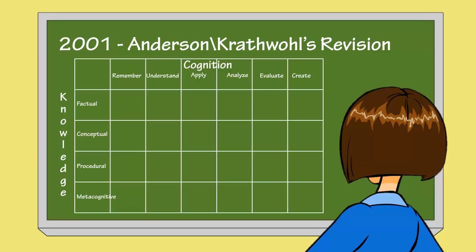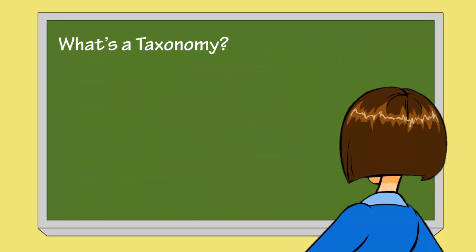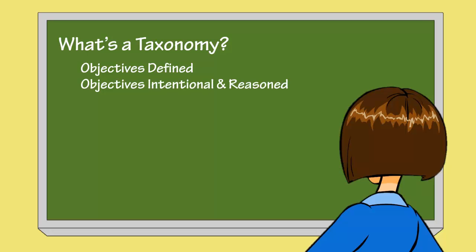What is this taxonomy table, and how can Ms. Williams use it to help her develop her own instruction? For that matter, what's a taxonomy? We have already made an attempt to define our objectives as part of the analysis phase of the instructional design process. We have thought these objectives through, and our efforts have been very intentional and reasoned to reach their final form. If Bloom's and others' work was intended to promote higher forms of thinking, and the taxonomy was the product of that work, let's see how that table can help.